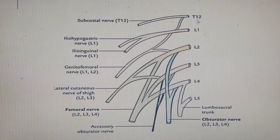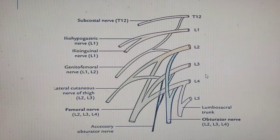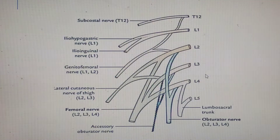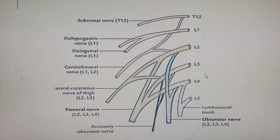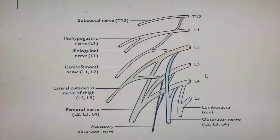From T12 all the way to L4, the ventral rami form the lumbar plexus. As I've told you in previous videos on nerve plexuses, the main trunk of the spinal nerve divides into the dorsal rami and the anterior rami. The dorsal (posterior) rami do not form plexuses — it is the ventral rami that form plexuses.